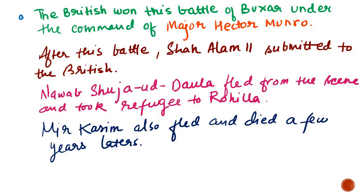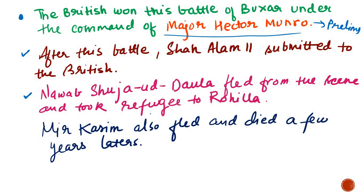The Britishers won the Battle of Buxar under the command of Major Hector Munro — this is again important for prelims and was once asked in prelims. After the battle, Shah Alam II submitted to the Britishers — that is, he surrendered himself. Nawab Shuja-ud-Daula fled from the scene and took refuge in Rohilla. Mir Kasim also fled the scene but died a few years later.